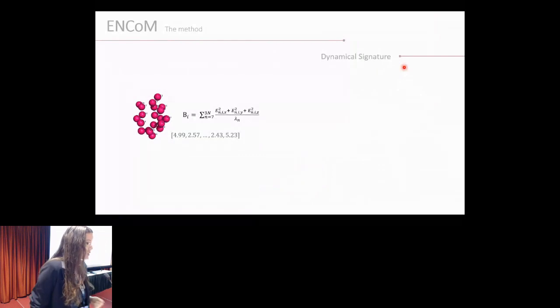Therefore we can model mutations and check the effect of those mutations in the dynamics of structures. One of the functions is the dynamical signature in which we consider the eigenvectors and associated eigenvalues that describe the movement of each residue to calculate kind of a B factor, a measure of the range of flexibility of each one of those residues. As an output, we have a vector describing the flexibility of each one of those residues that constitute the structure.